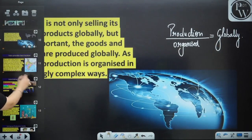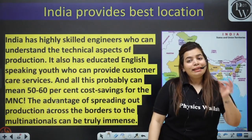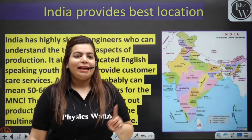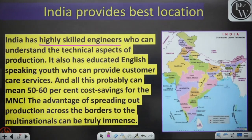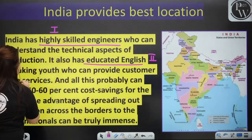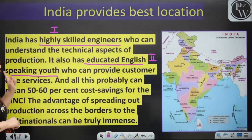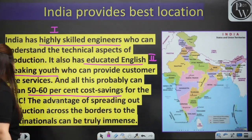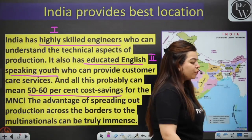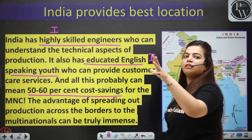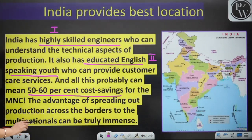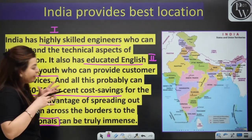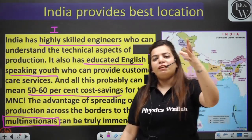Why does India provide a good location for MNCs? India has highly skilled engineers who can understand technical aspects of production. It also has educated English-speaking youth who can provide customer care services. All this probably means 50 to 60 percent cost saving for an MNC. So MNC sees India as the best location to find skilled and unskilled labour, and the advantage of spreading production across borders to multinationals can be truly immense.